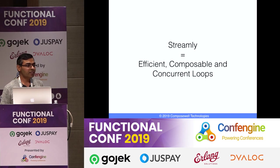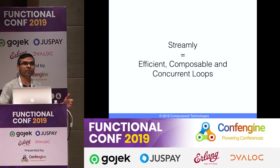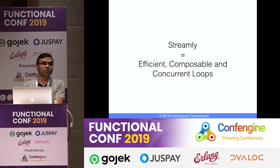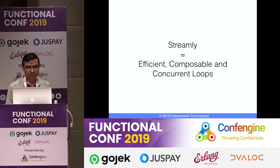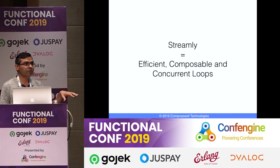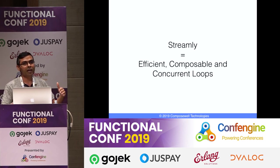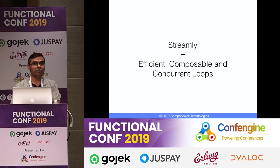Streamly provides efficient, composable, and concurrent loops. If you need looping in imperative programming, you can use Streamly combinators for that processing. If you think about your problem imperatively, you can model it in functional programming on streams.